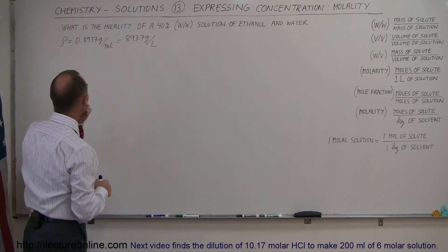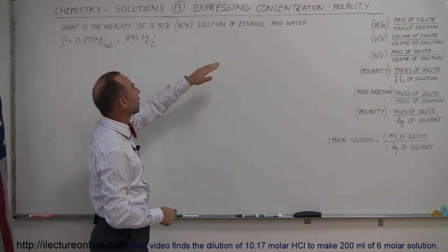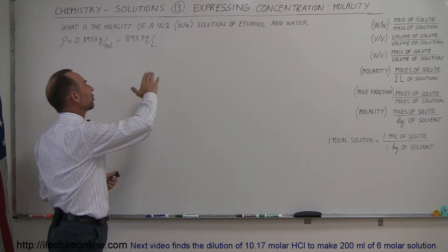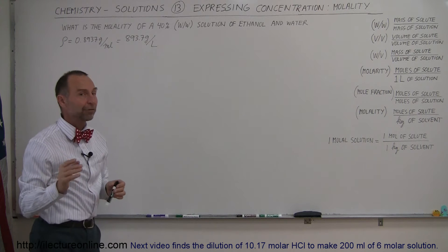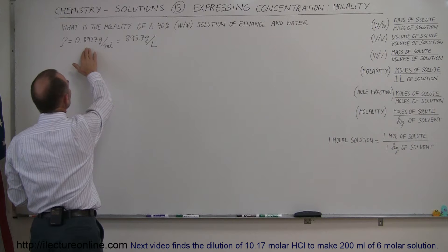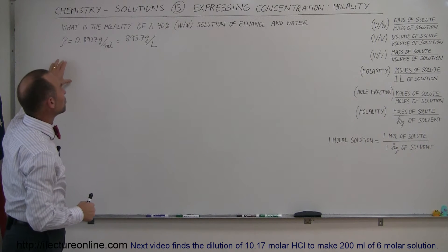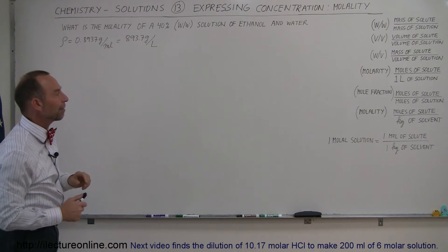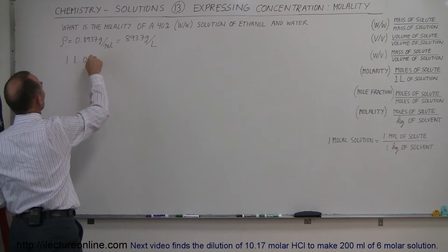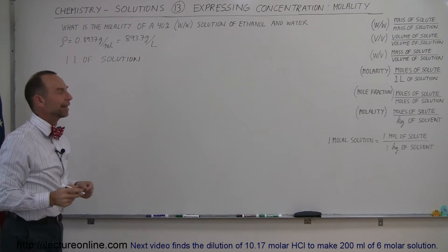So let's do an example. What is the molality of a 40 percent weight-in-weight solution of ethanol and water? We've done this before — in the previous case we tried to find the molarity of this type of solution. Now we're going to find the molality and compare the two. The density is 0.8937 grams per milliliter, or 893.7 grams per liter. Let's find out how many moles of ethanol we have, starting with one liter of the solution.